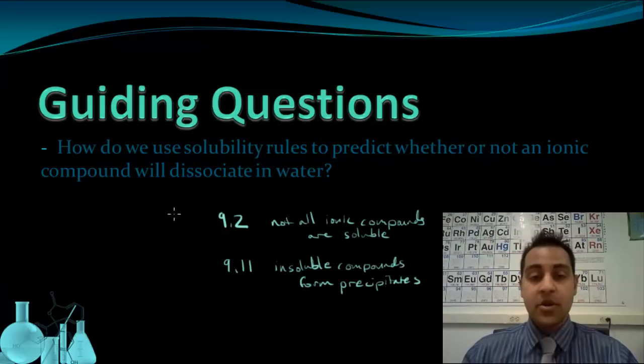In this lesson, we're going to look at some general rules or guidelines that allow us to predict the solubility of compounds based on the ions in those compounds. By the end of this lesson, we're going to be able to predict the solubility of a compound just by looking at the ions that make up that compound.